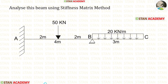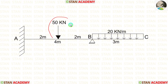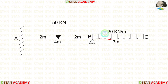Before analyzing, let us see the beam. In this beam, there is a span AB and an overhanging span BC. In the span AB, there is a point load of 50 kN acting at the center. In the overhanging span BC, there is a uniformly distributed load of 20 kN per meter.